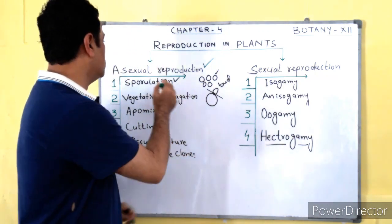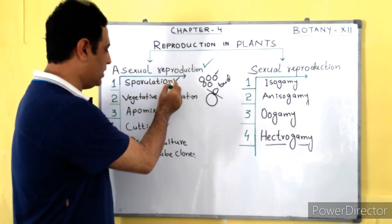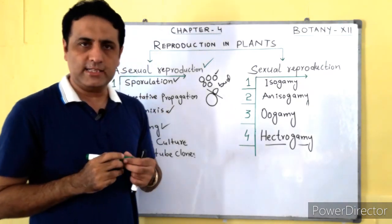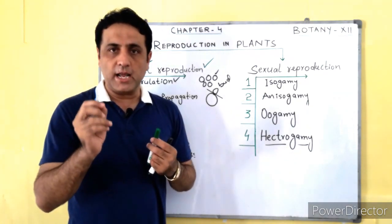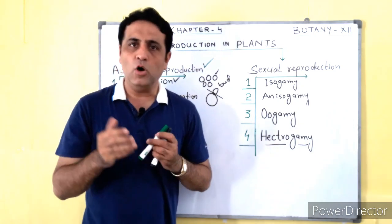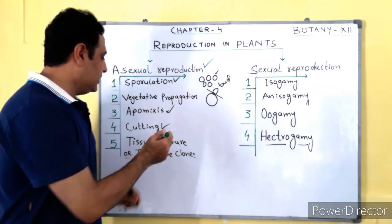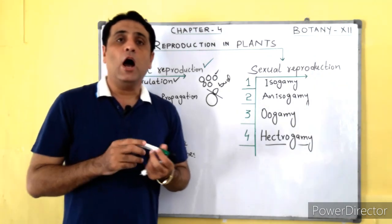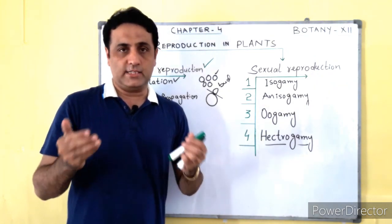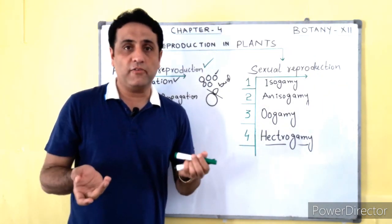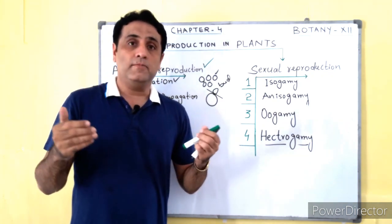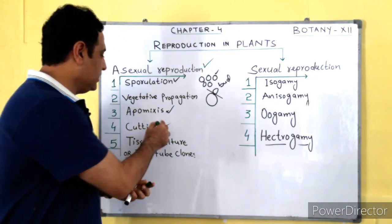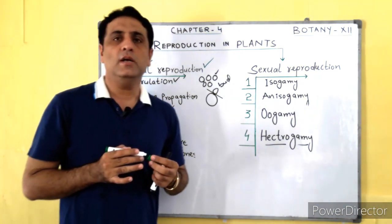These three — sporulation, vegetative propagation, and apomixis — are examples of natural types of asexual reproduction. Now there are two more types: cutting and tissue culture, which are considered artificial types of asexual reproduction. Artificial means there is addition of human intervention.